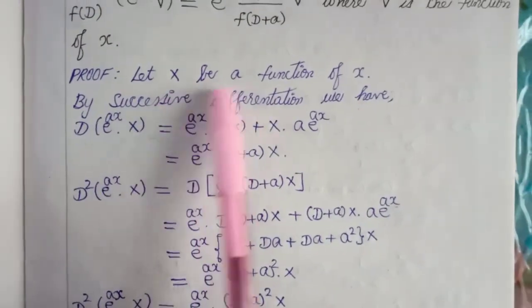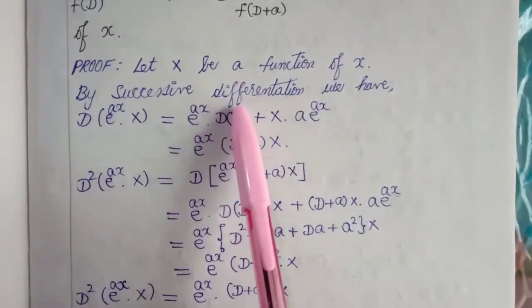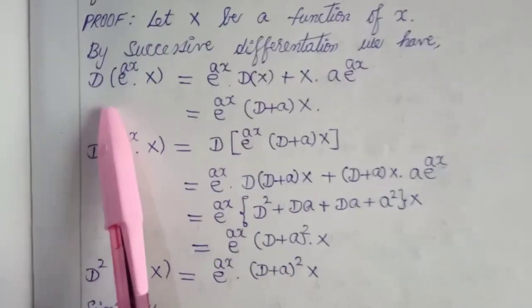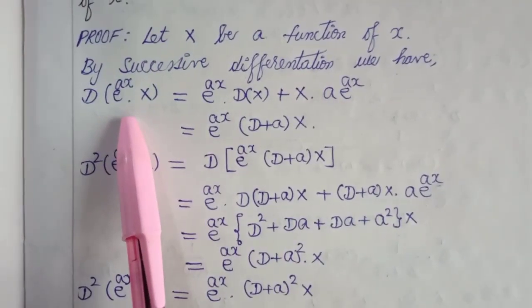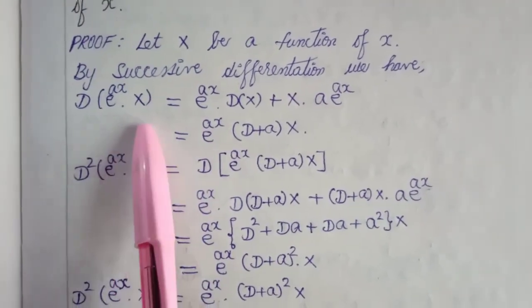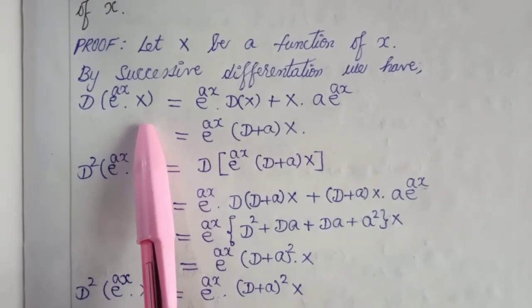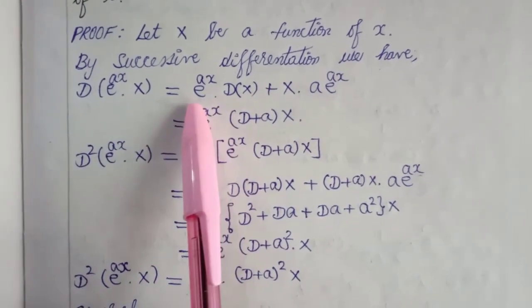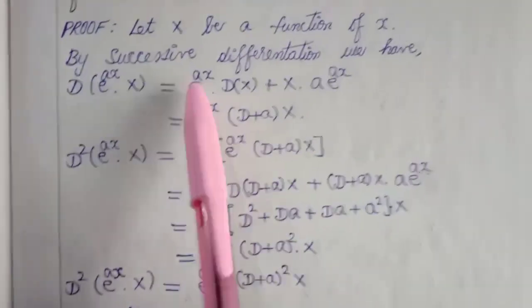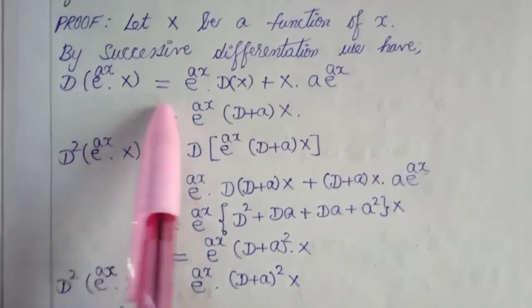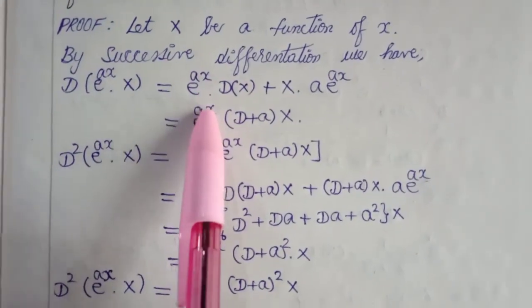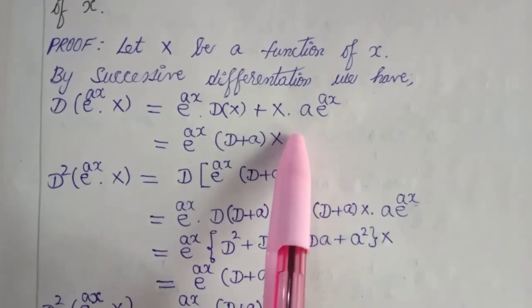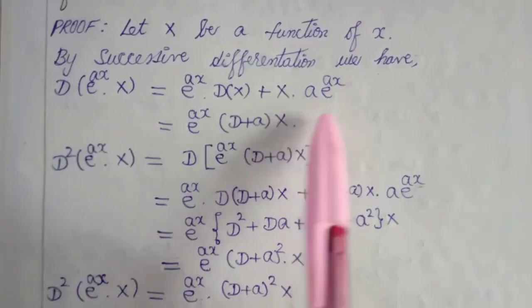Let's consider χ to be a function of x. We already have studied successive differentiation. By successive differentiation, we will find what is the derivative of e^(ax) into χ. This is two functions, so we will be using the product rule: the derivative of two functions is u into dv/dx plus v into du/dx. So d into e^(ax) into χ will be equal to e^(ax) into the derivative of χ, plus χ into the derivative of e^(ax), which gives us a into e^(ax).